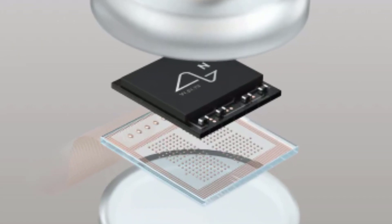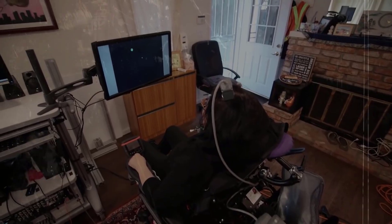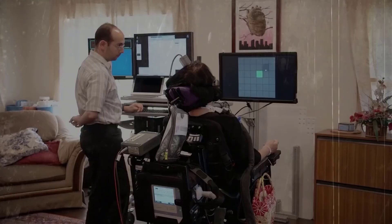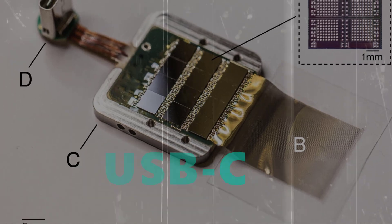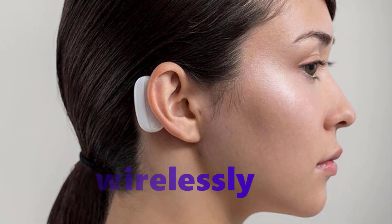Neuralink has developed a custom chip that is better able to read, clean up and amplify signals from the brain. Right now, it can only transmit data via a wire connection. It uses USB-C. But ultimately, the goal is to create a system that can work wirelessly.